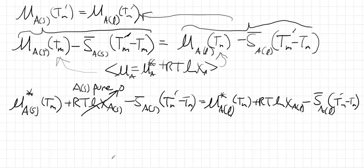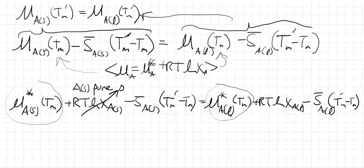Second, recall from the first beaker that at the normal melting temperature Tm, pure solid A and pure liquid A are in equilibrium. This means μ*_A(solid, Tm) = μ*_A(liquid, Tm), so those two pure chemical potential terms cancel each other out.